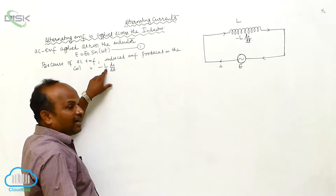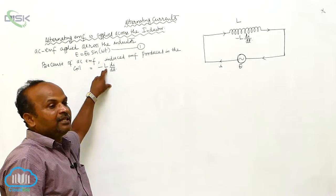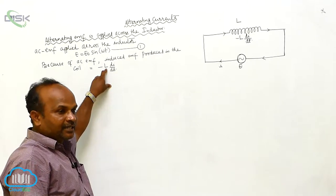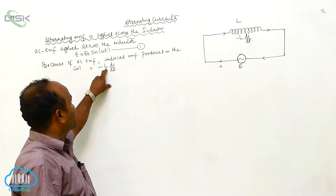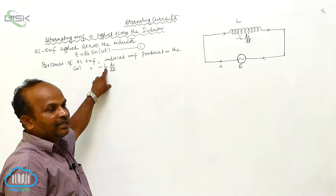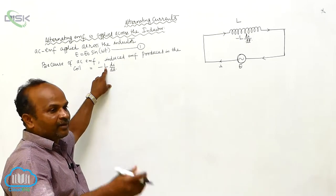What is L? That is the inductance — self-inductance of the coil. dI/dt is the rate of change of current.